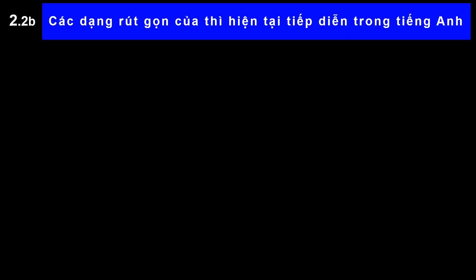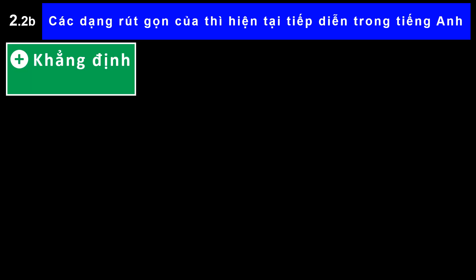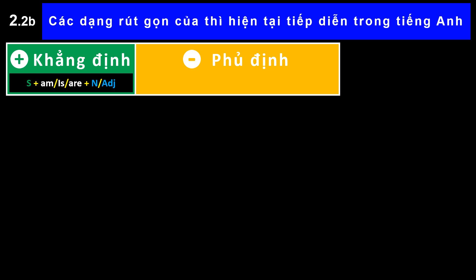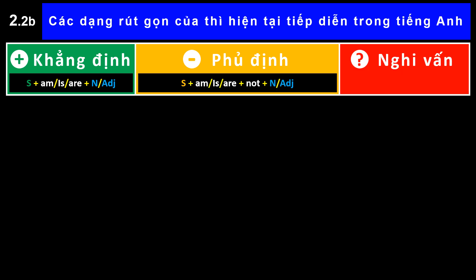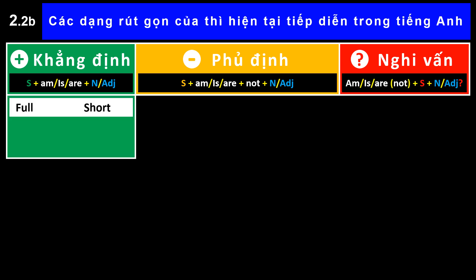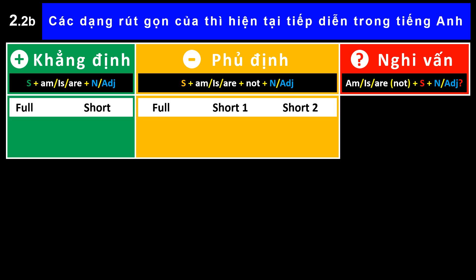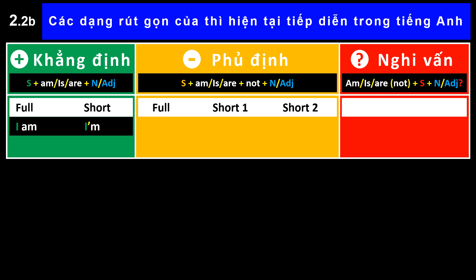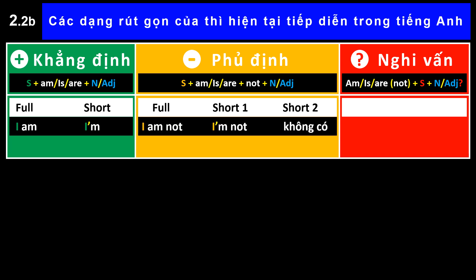Contractions of present continuous tense in English. Affirmative. Negative. Interrogative. Full form and short forms. I am → I'm. I am not → I'm not. Am I?